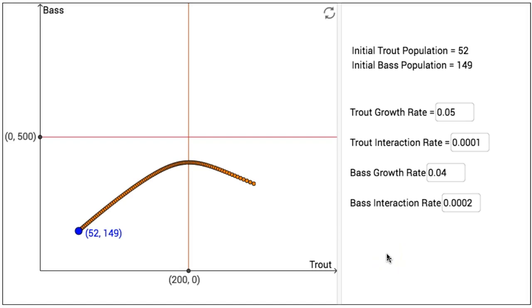In this interactive figure, a competitive hunter model, you will have the opportunity to explore two species of fish, trout and bass, who happen to be living in the same body of water, competing for the same limited resources.